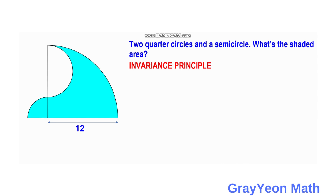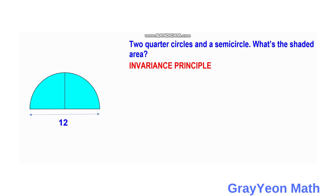For the third method, we again use the invariance principle, but this time we maximize the smaller quarter circle and minimize the unshaded semicircle to zero. The resulting figure is simply a semicircle, since the unshaded semicircle has been reduced to zero and is no longer visible.